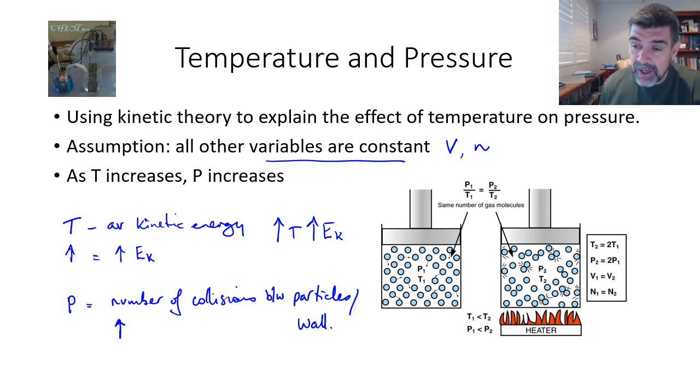You can see on the diagram here that if we keep the number of particles the same and the volume the same, then the only way that we can have an increase in temperature and keep those other two variables the same is if we also increase the pressure. That is, we increase the number of collisions between the particles.